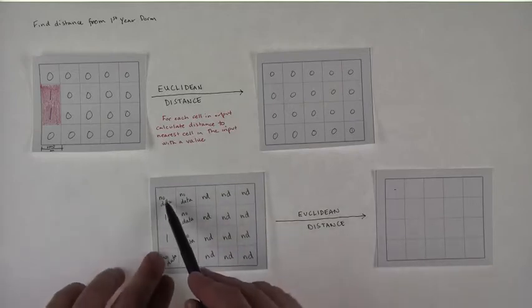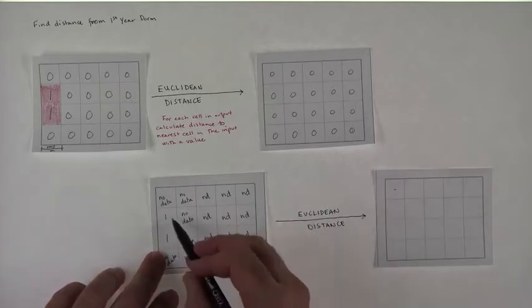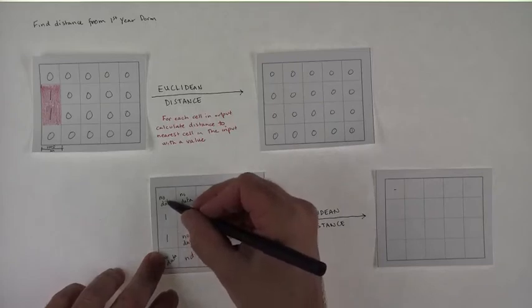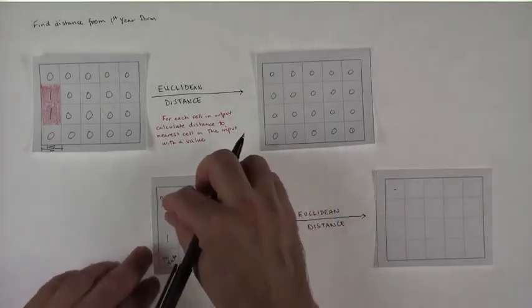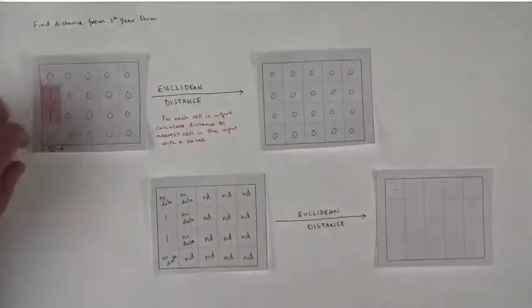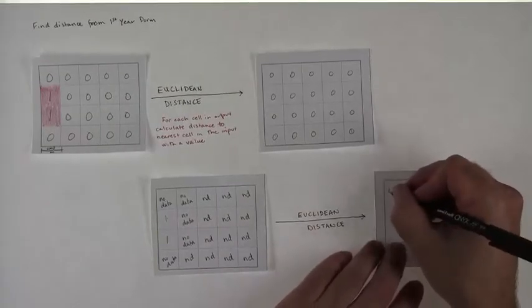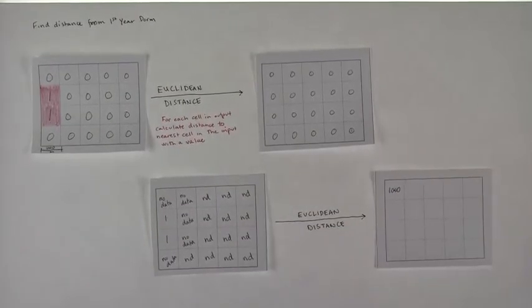How far away is this cell to the distance to the nearest cell in input with a value? So this one has no data, and the nearest location is now one, right there. And so this distance from here to here is basically the same as the side of the cell, and the side of the cell is a thousand, so this guy right here is going to be a thousand meters. Is that fair?